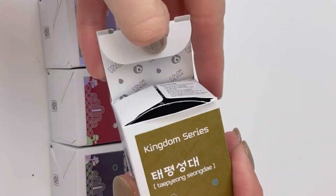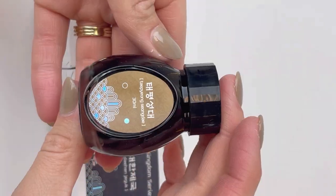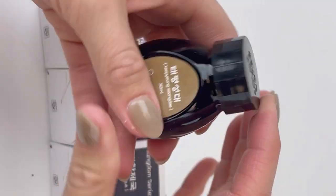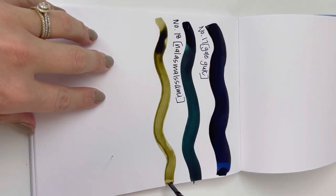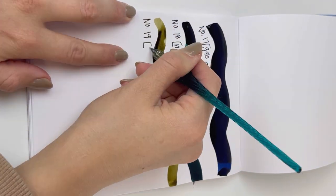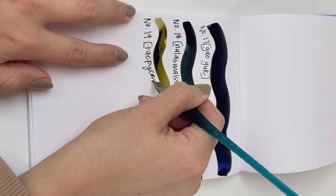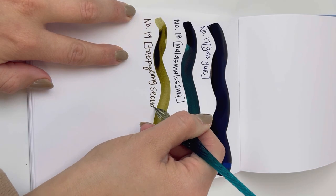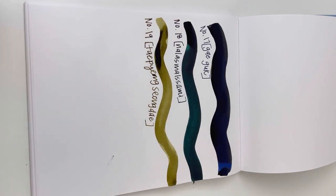So that second one was number 18, Nala Smalsmi, and next we're going to do number 19, Taep Yeong Seongde. And that one actually goes down immediately, you see some interesting, looks like it's going to shade really well.